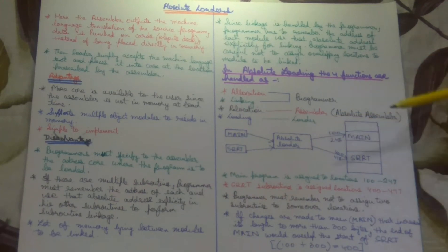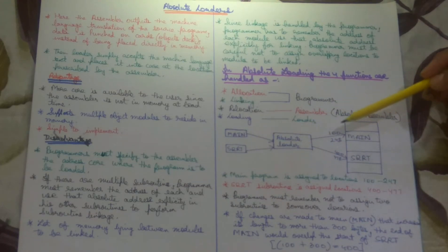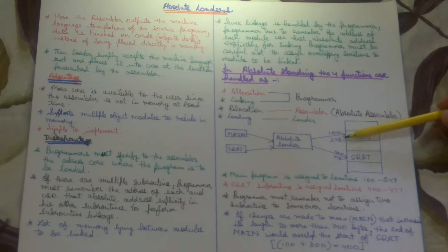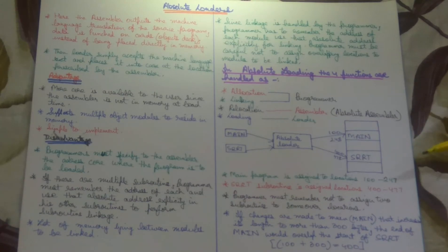Now I have to show you an example which has two methods, one is main and one is SQRT. This is absolute loader. Main occupies the area from 100 to 247, that is 100 to 248. And SQRT subroutine is assigned the locations 400 to 477, which is 400 to 478, meaning 400 to 477. The programmer must remember not to assign two subroutines to the same overlapping locations. The programmer needs to ensure that two subroutines are not assigned the same locations.